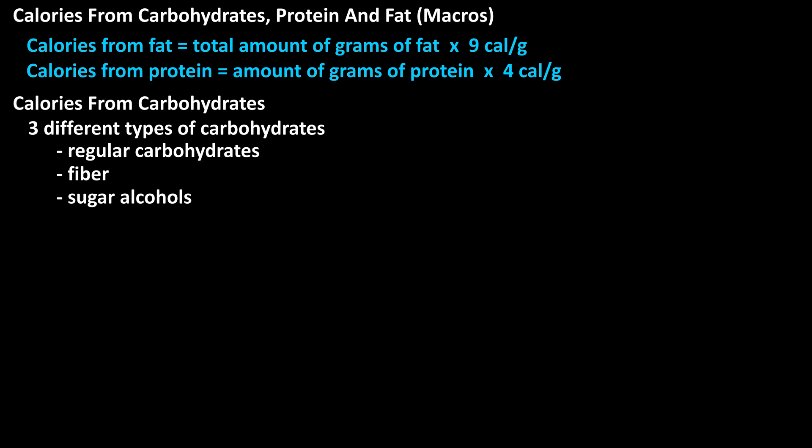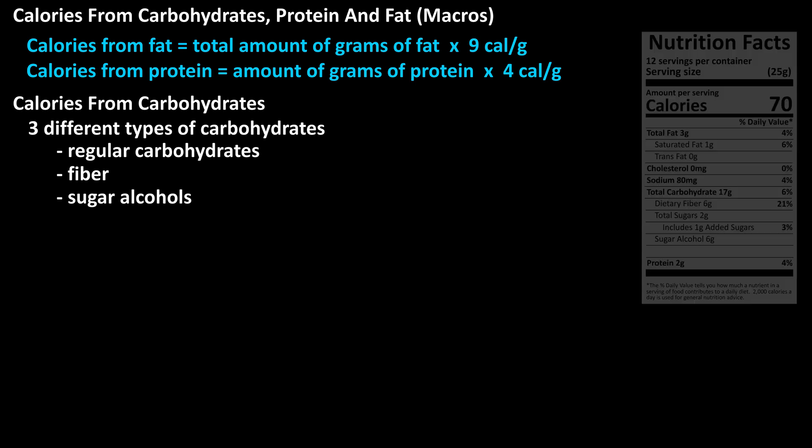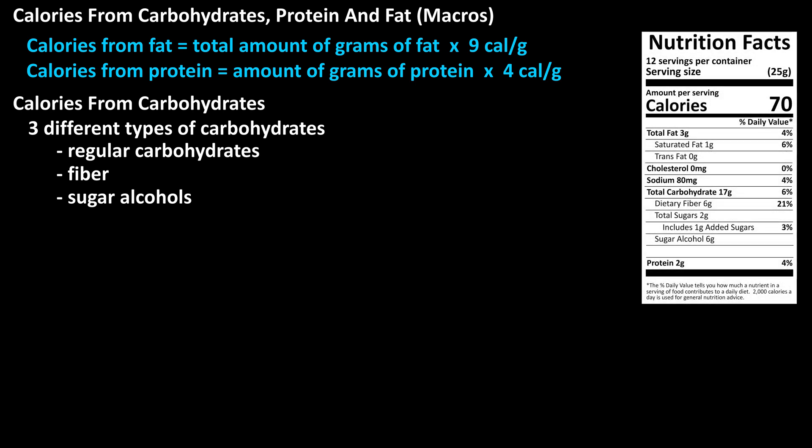Each of these provide different caloric amounts. Here is an example nutrition facts label. For a one serving size, we see for total carbohydrates it lists 17 grams. This 17 grams of total carbohydrates includes regular carbohydrates, fiber, and sugar alcohols. To find the number of regular carbohydrates, we need to deduct the six grams of fiber and the six grams of sugar alcohols that the label lists.